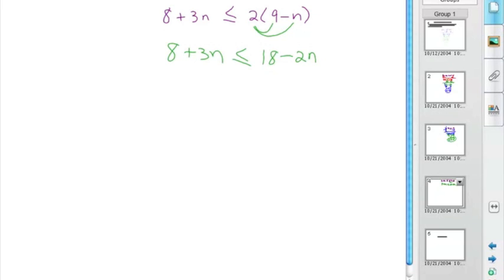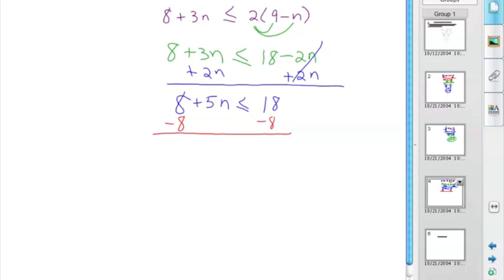So we have 8 plus 3n is less than or equal to 18 minus 2n. We want to move all the n's to one side. We'll choose to move them to the left-hand side, so we'll add 2n to both sides. What happens to the two n's on the right-hand side? They cancel each other out. So we have 8 plus 5n less than or equal to 18. Now it's just like the first equation we solved. We need to remove 8, so we will subtract 8 from both sides. The 8s cancel each other out.